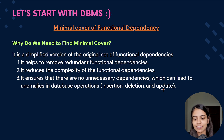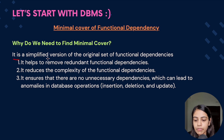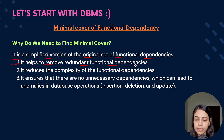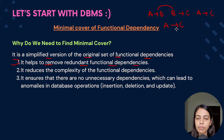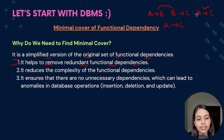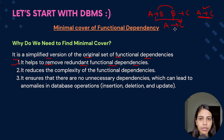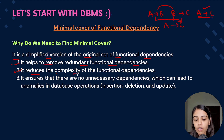So without any further ado, let's get started. What is this minimal cover of functional dependency and why do we even need it? It is a simplified version of the original set of functional dependencies. It helps us to remove redundant functional dependencies. Consider if we have A determines B, B determines C, and A determines C — from the rule of transitivity we can conclude that A will determine C, so we don't need that redundant functional dependency.